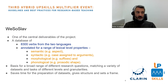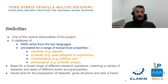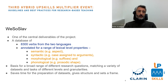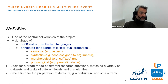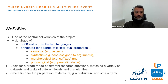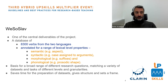One of the main deliverables of the project is a database titled WeSoSlav — Western South Slavic verbs database. It consists of over 8,300 verbs from the two languages, annotated for a range of lexical-level properties, including semantic, syntactic, morphological, and phonological properties that hold for the entire lexeme. This database is a basis for a broad range of different research questions, matching a variety of data sets, tasks, levels, and granularities.